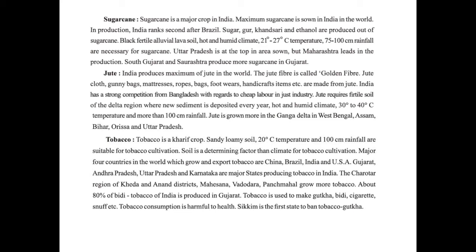The next topic is tobacco. Tobacco is a kharif crop. Sandy loamy soil, temperature of 20 degree Celsius, and 100 cm rainfall are suitable for tobacco cultivation; soil is a more determining factor than climate. The major four countries that lead in tobacco export are China, Brazil, India, and USA. Gujarat, Andhra Pradesh, Uttar Pradesh, and Karnataka are major tobacco producing states in India. The Charotar region of Kheda and Anand districts, Mahasana, Vadodara, and Panchmahal grow more tobacco. About 80% of Bidi tobacco of India is produced in Gujarat.